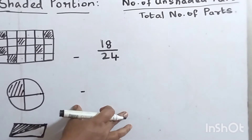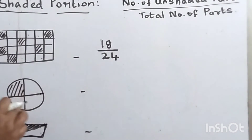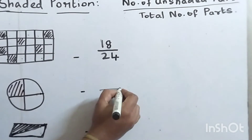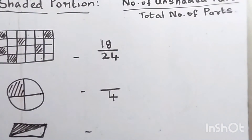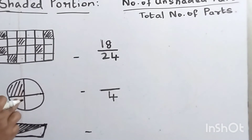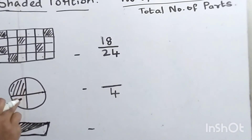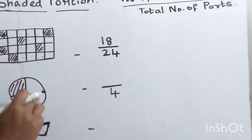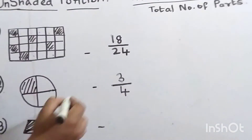Next one. Total parts are 4. Now count the unshaded parts: 1, 2, 3 — three parts are unshaded. So our fraction is 3 by 4.